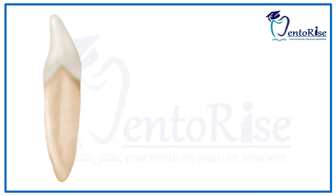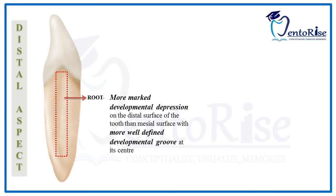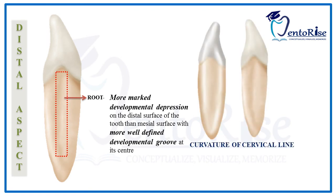Moving to the distal aspect of the permanent mandibular central incisor: comparing with the mesial aspect, there is one major difference. The developmental depression on the root on the distal aspect is more marked compared to that on the mesial aspect. Also, a more well-defined developmental groove is present in the center of this depression on the distal aspect. The extent of curvature of the cervical line is similar on both the mesial and distal aspects.